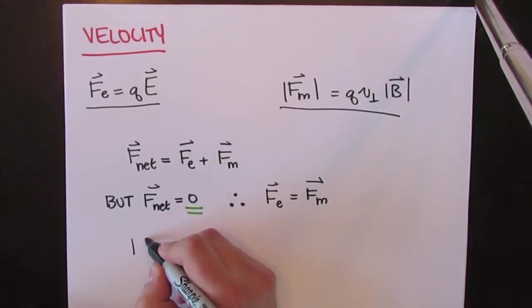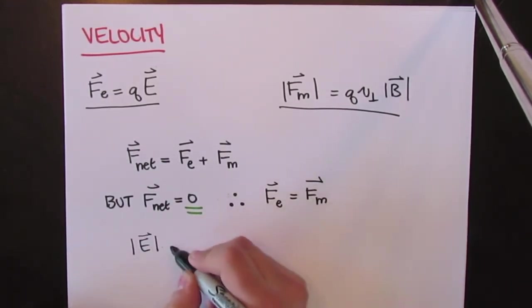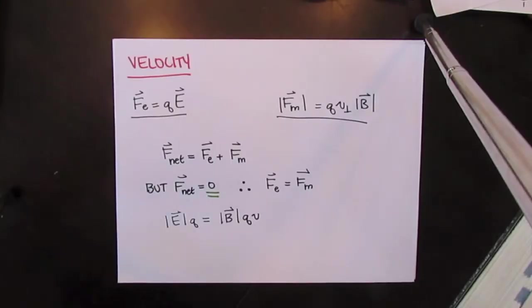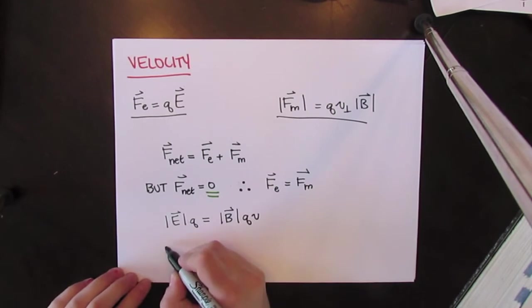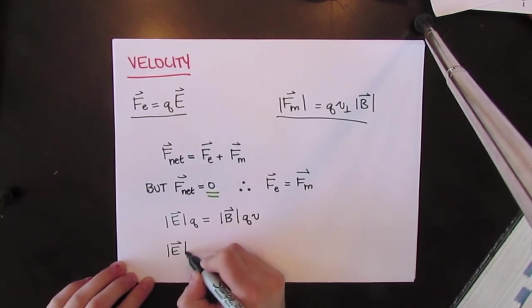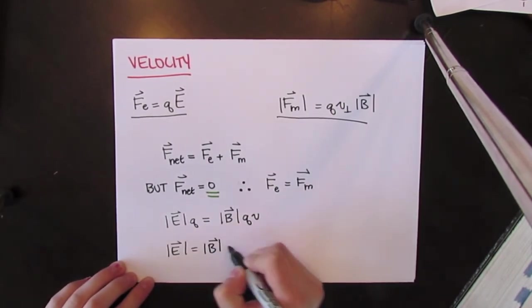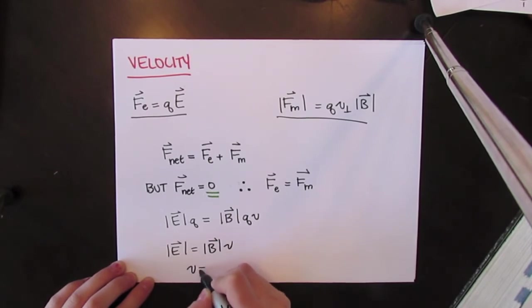The charge on both sides cancels out and we are left with the electric field strength is equal to the magnitude of the magnetic field multiplied by the velocity. If the equation is isolated for velocity, we end up with a final equation of velocity equaling the electric field over the magnitude of the magnetic field.